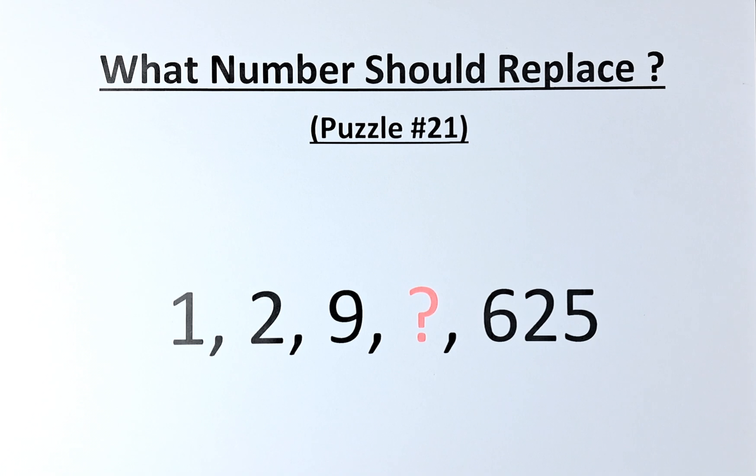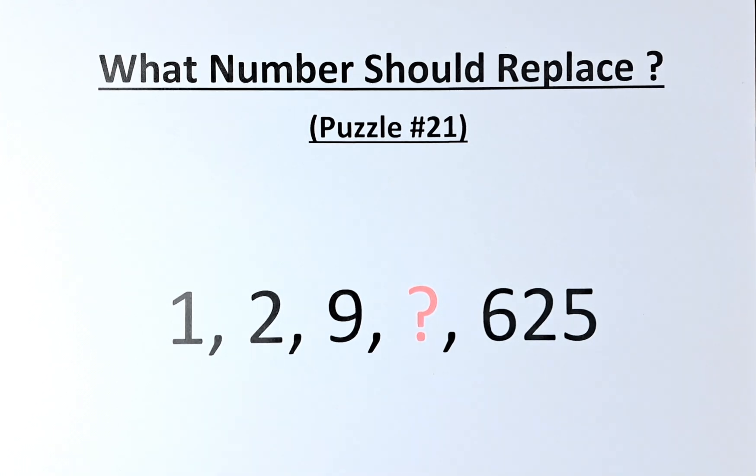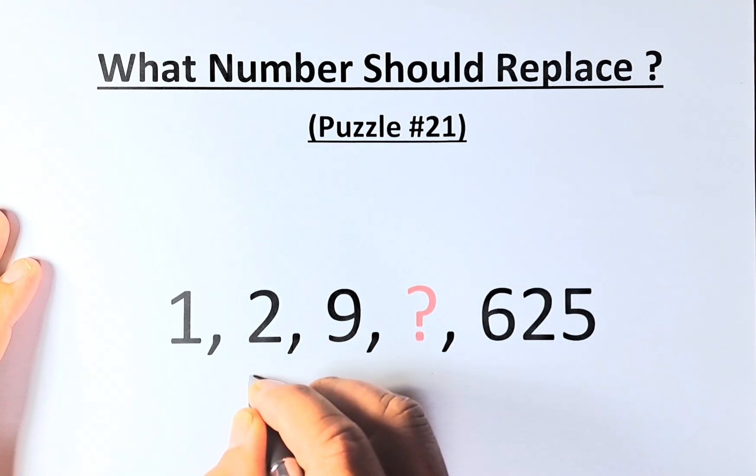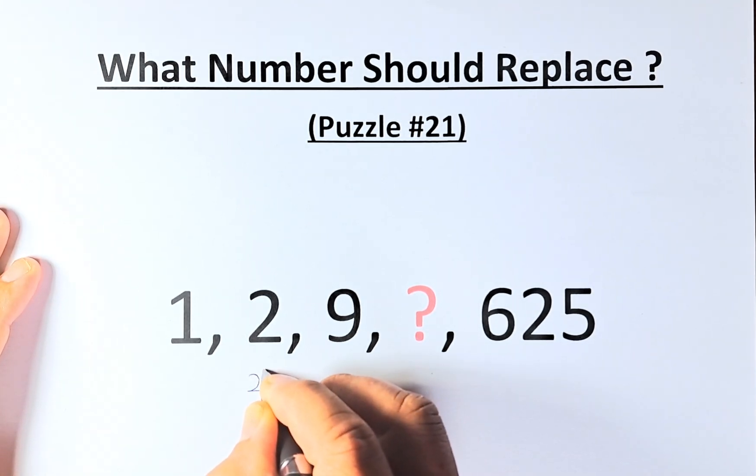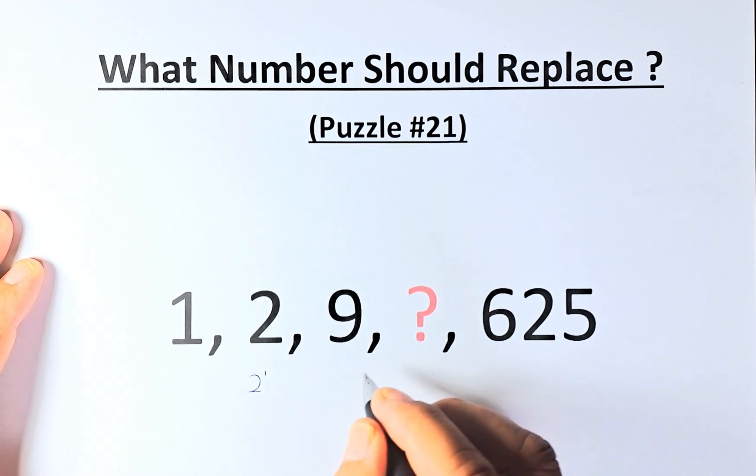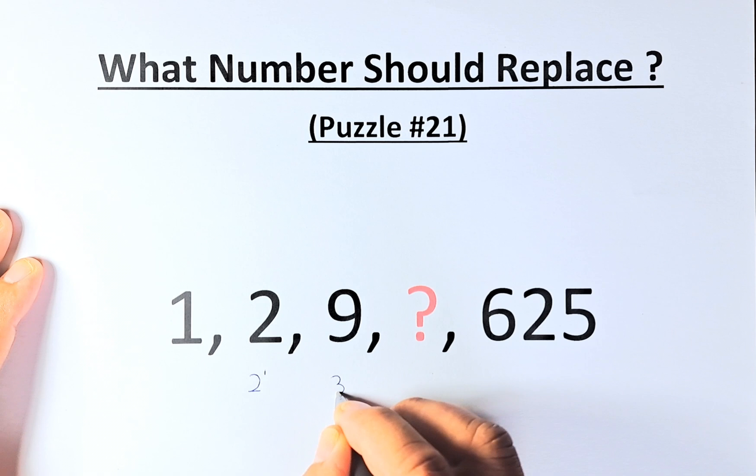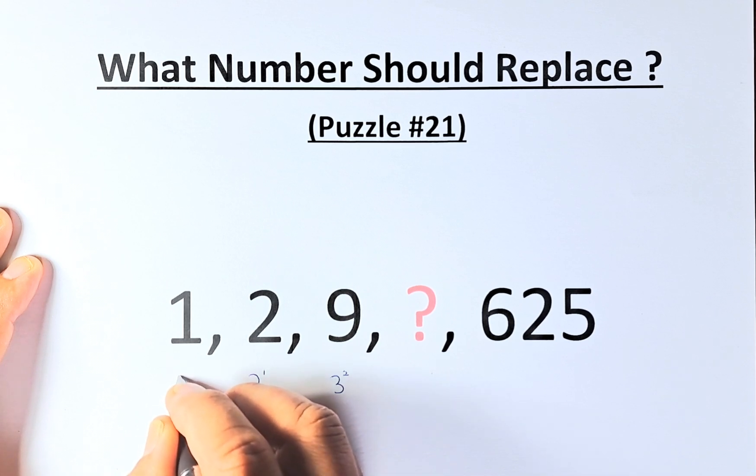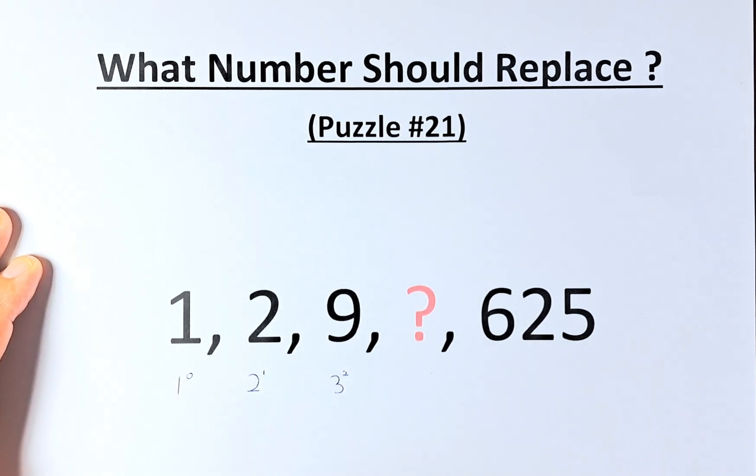So the answer to the puzzle is as follows. We're going to start with 2 because 1 is just a 1. So 2 is the same as 2 to the power of 1. 9 is going to be 3 to the power of 2. Now going back to 1, 1 is the same as 1 to the power of 0.